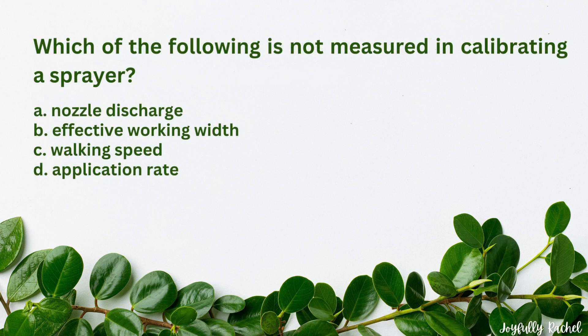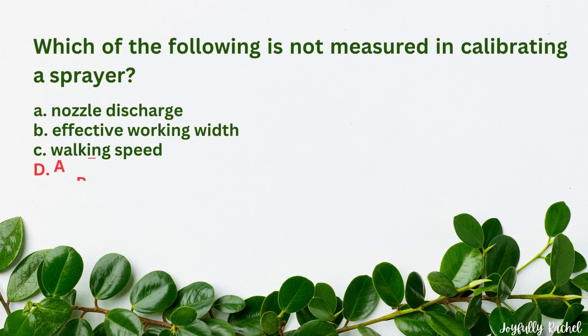Which of the following is not measured in calibrating a sprayer? A. Nozzle discharge, B. Effective working width, C. Walking speed, D. Application rate. The answer is D. Application rate.